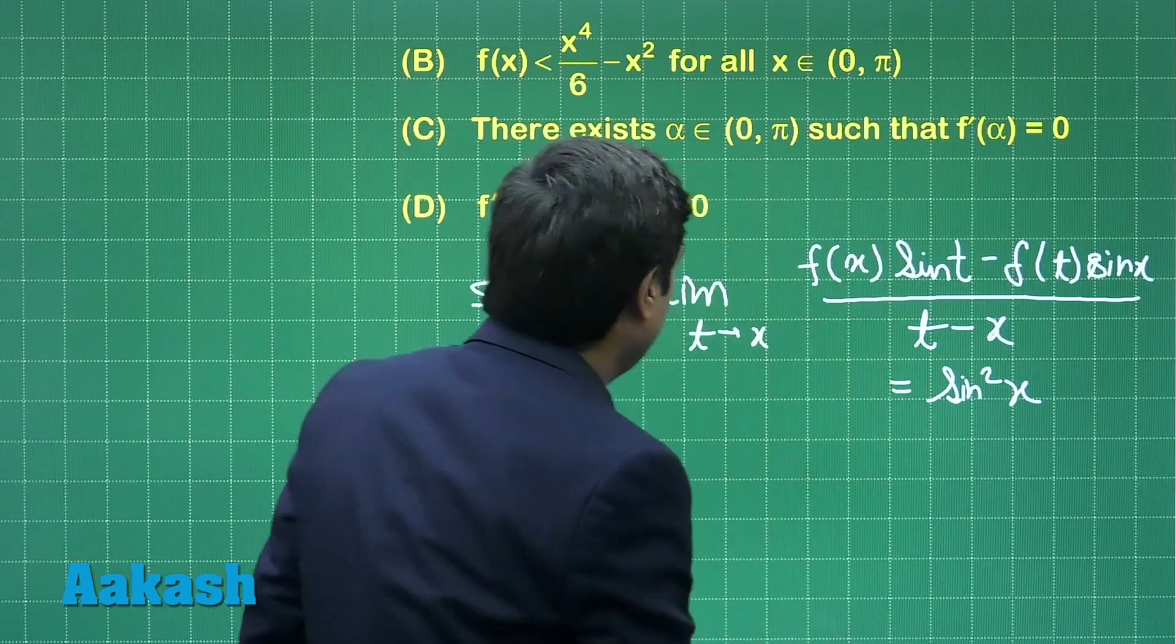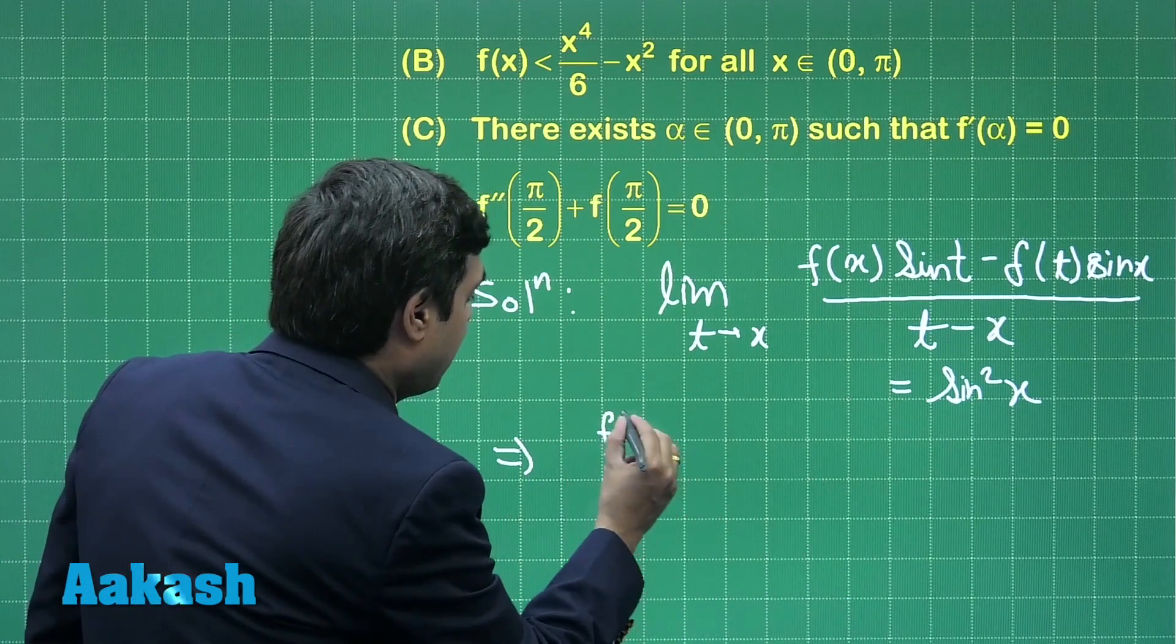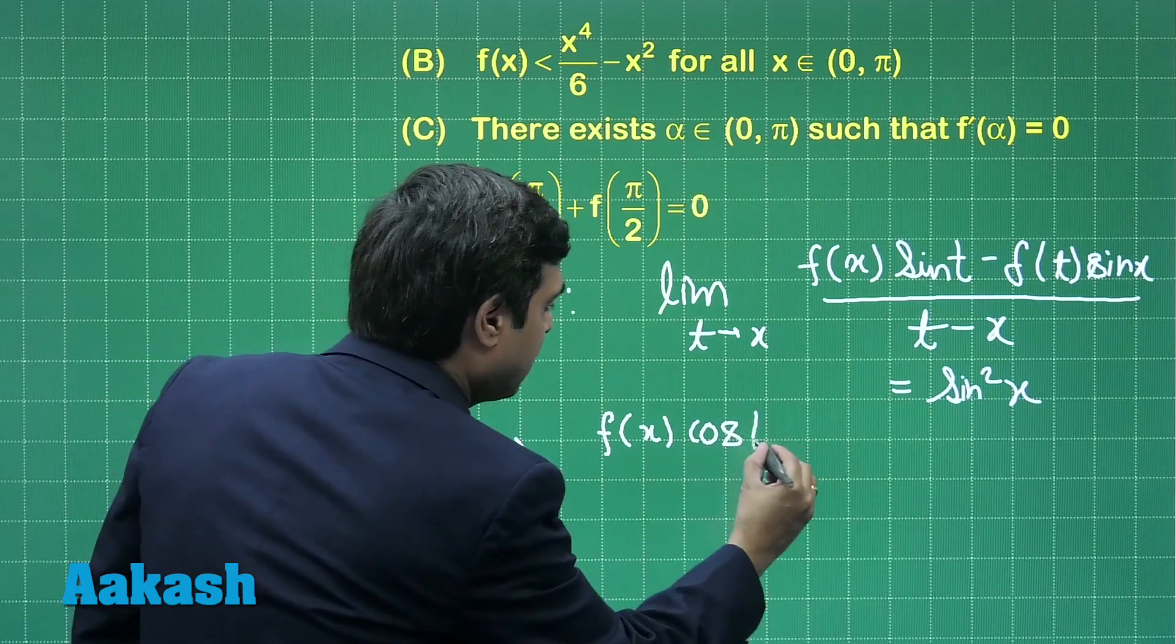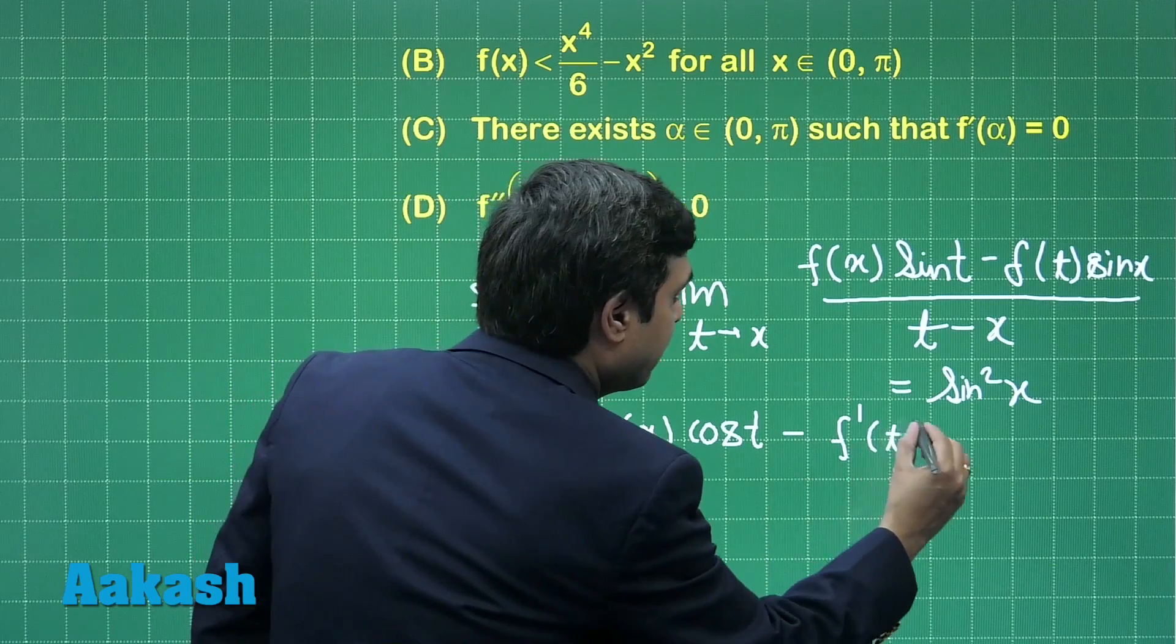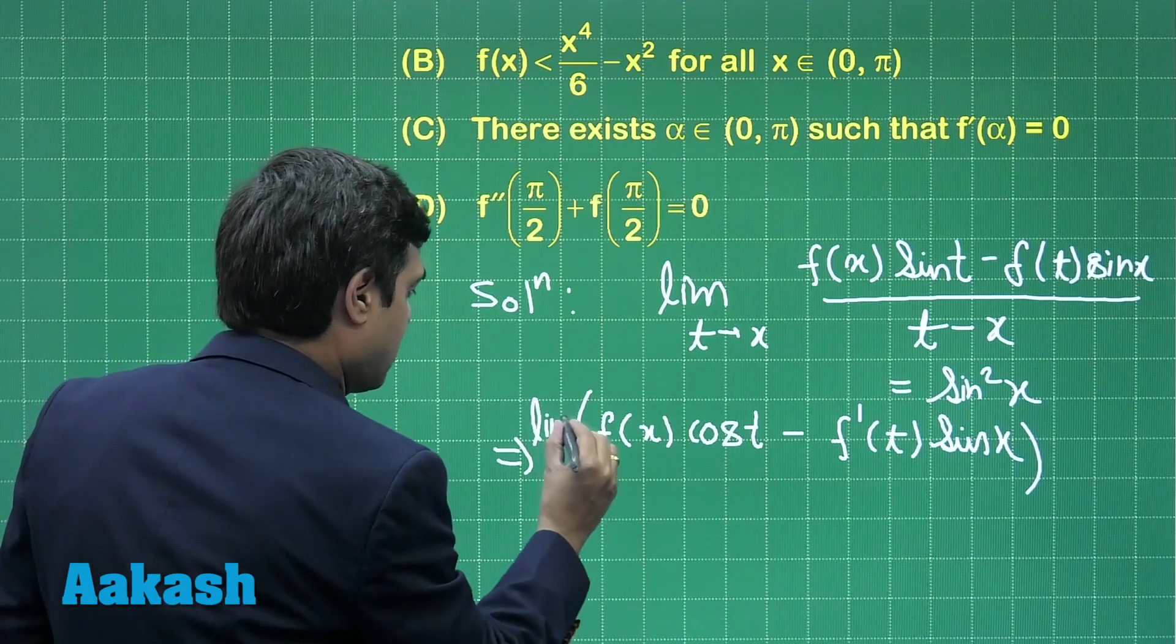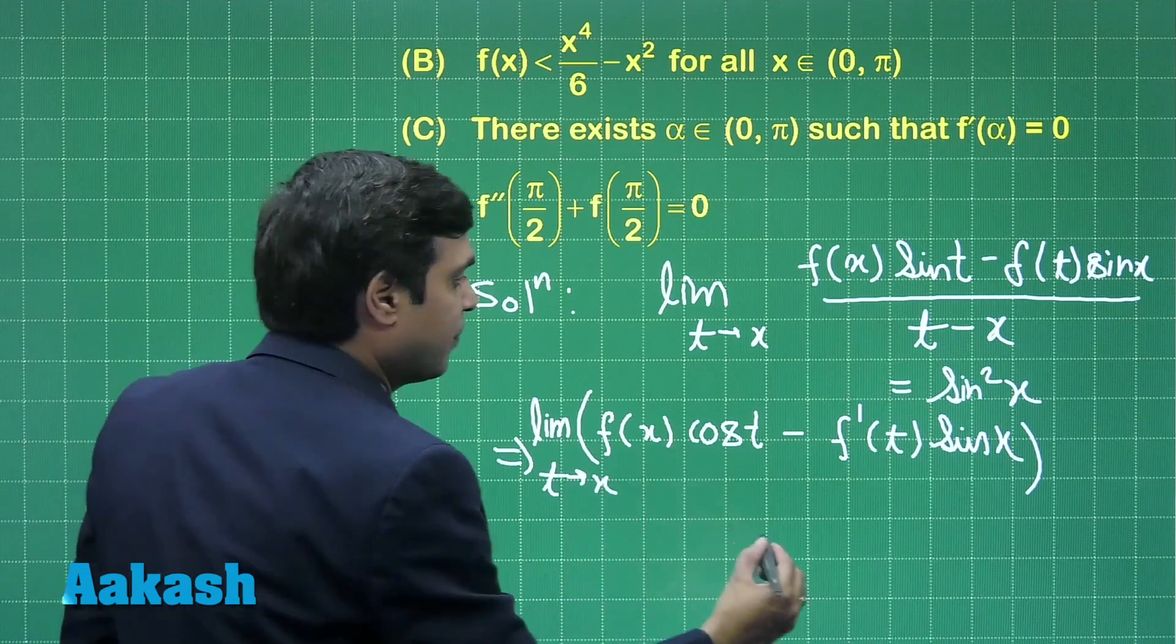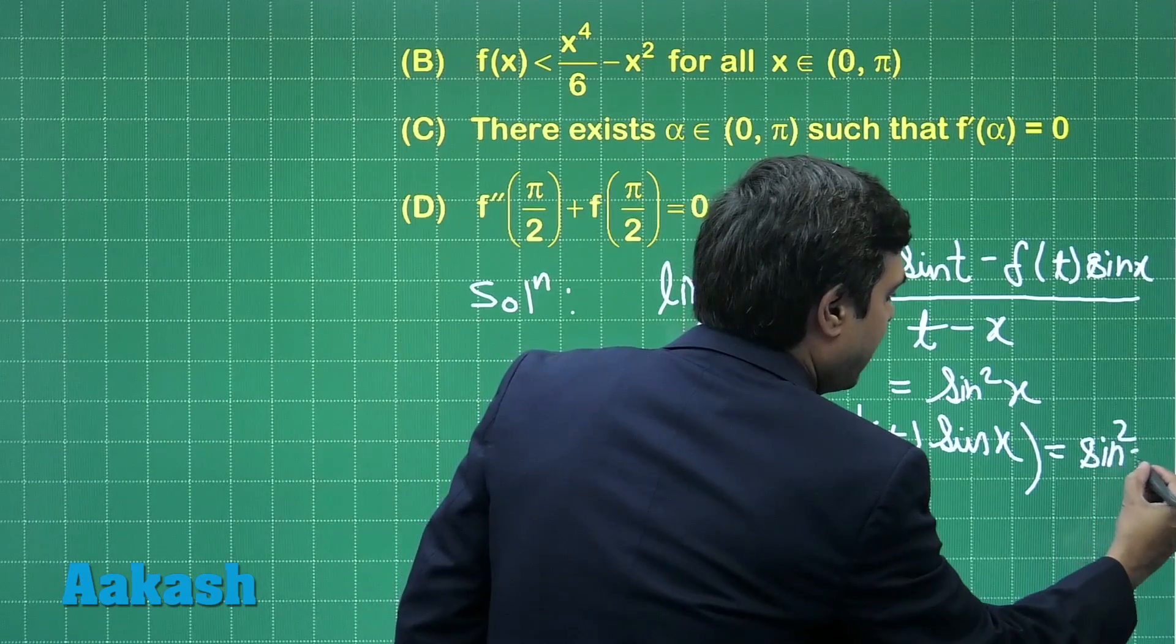Now, applying L'Hôpital's rule to this equation, we can see f(x)cos t - f'(t)sin x under the limit. So f(x)... x equals... equals sin²x.